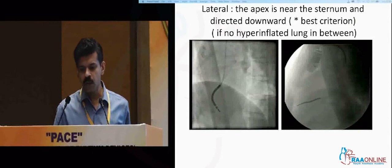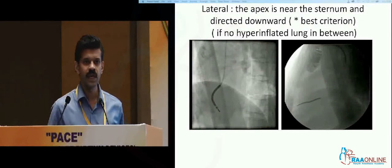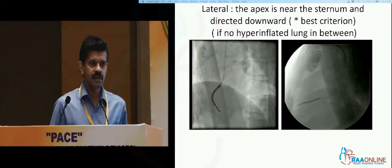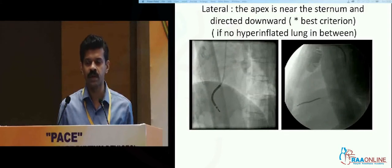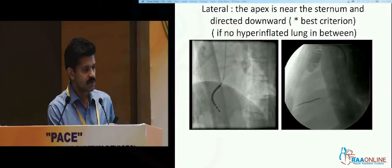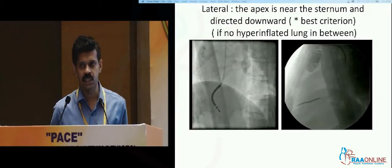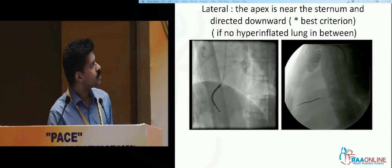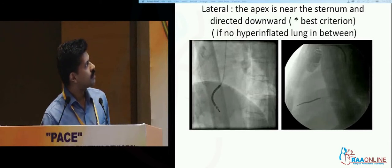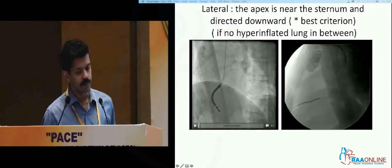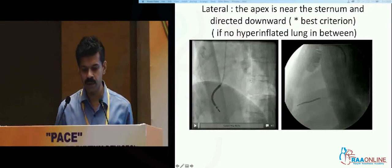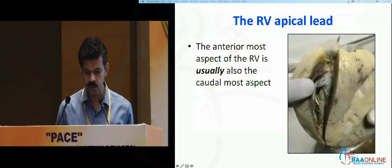The lateral view is probably the best view to see the apex. Provided the heart is normal and the lungs are not hyperinflated, the apex will be virtually touching the sternum. So the apex is near the sternum and directed downward — provided there is no hyperinflated lung in between — that's in the lateral view.